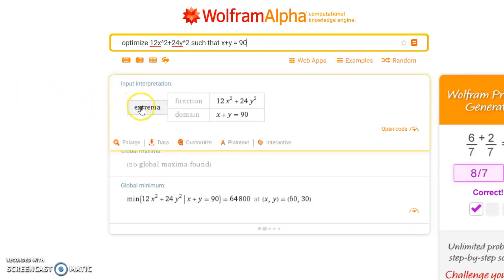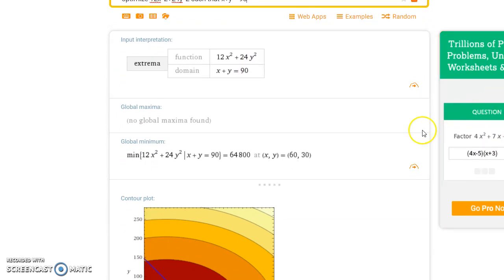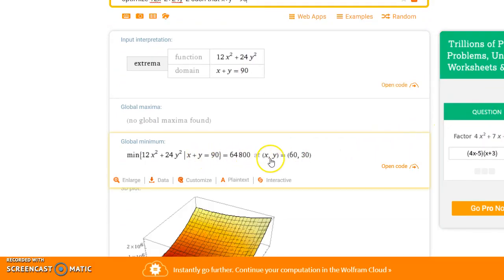We're going to be finding extrema for this given function with a specific domain, or in this case, that constraint, x + y equals 90. No maximum is obtained, but we're looking for a minimum, which would occur at x equals 60, y equals 30, with a function value of 64,800.